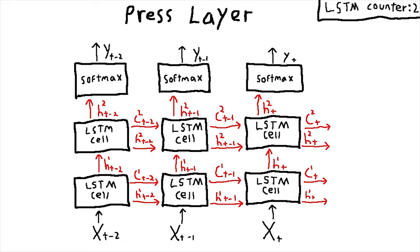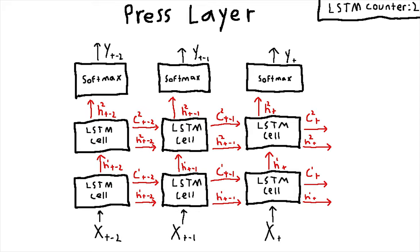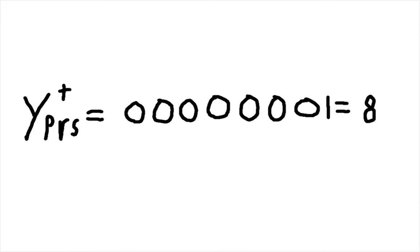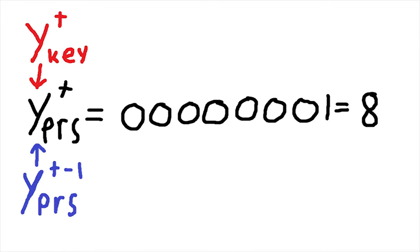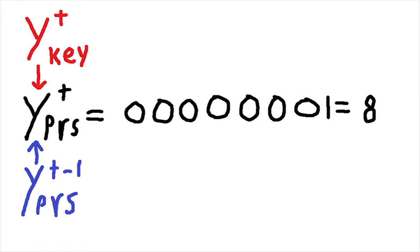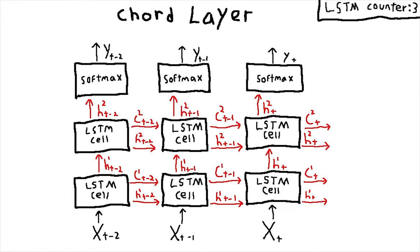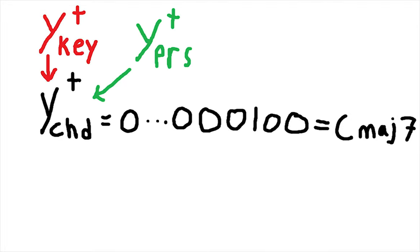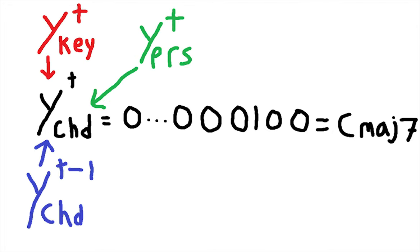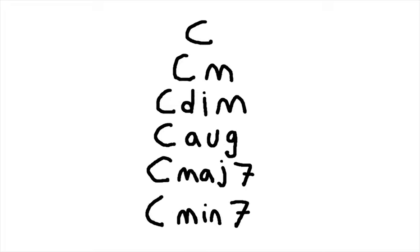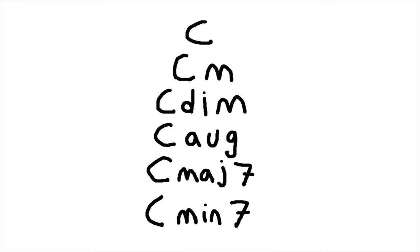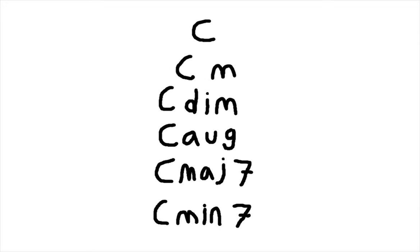In the press layer, another two-layer LSTM is used to generate a number between 1 and 8 representing how long the key will be held, based of course on the key at that time step and the press duration from the previous time step. For chords, a two-layer LSTM is used to choose one of 72 chords based on the current key and press duration in the previous chord generated. This comes from the discovery that in the pop music dataset used for training, over 99% of all chords were one of six types over 12 starting notes.